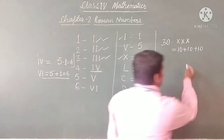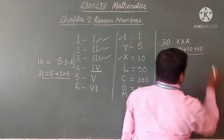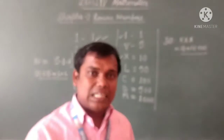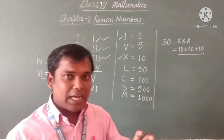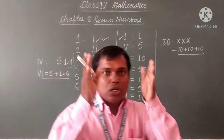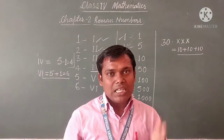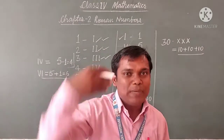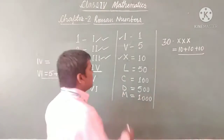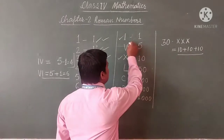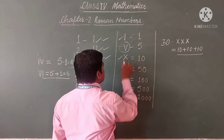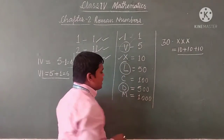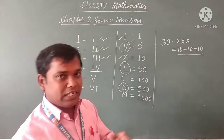Remember, we cannot write any of the symbols more than three times. We also have to learn which symbols are never repeated. You must remember: symbol V, symbol L, and symbol D are never repeated.